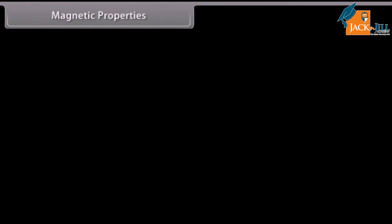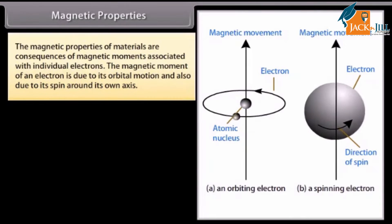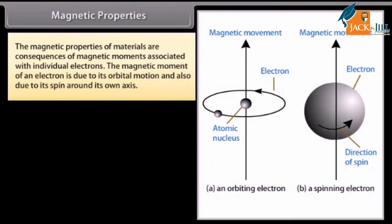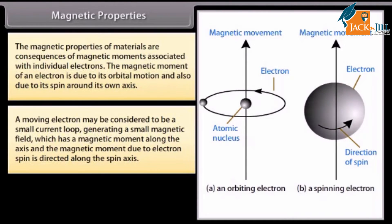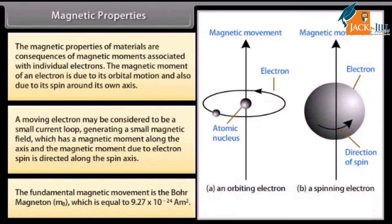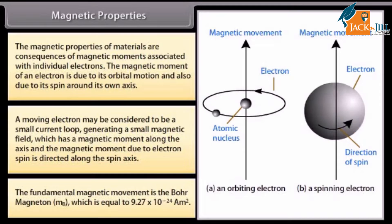Magnetic properties: The magnetic properties of materials are consequences of magnetic moments associated with individual electrons. The magnetic moment of an electron is due to its orbital motion and also due to its spin around its own axis. A moving electron may be considered to be a small current loop generating a small magnetic field with a magnetic moment along the axis. The fundamental unit of magnetic moment is the Bohr magneton, Mb, which equals 9.27 × 10⁻²⁴ A·m².